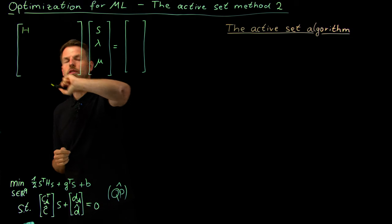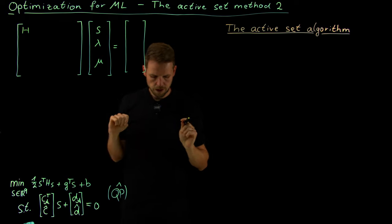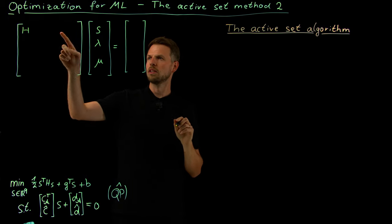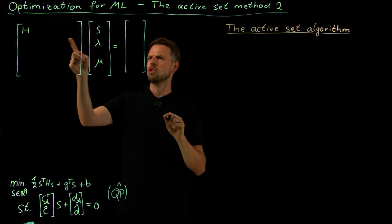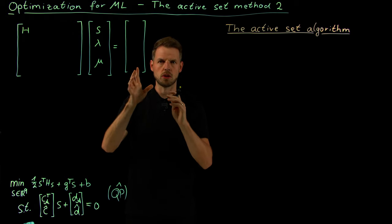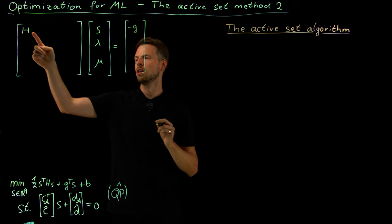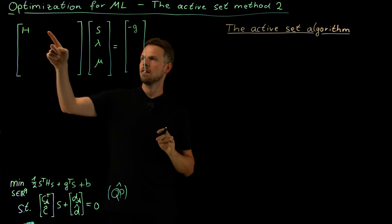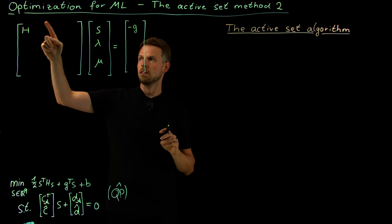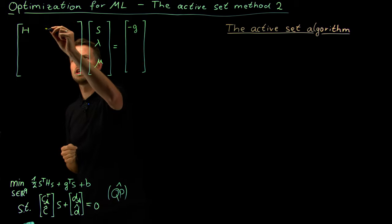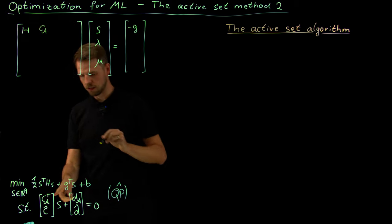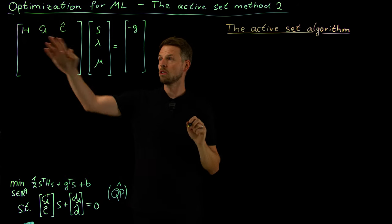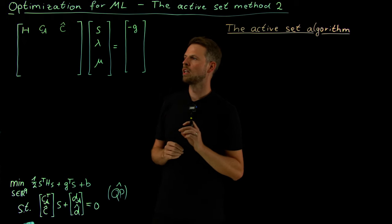Our condition is: the gradient of the loss function has a quadratic term H times s, plus derivative of the linear term g times s which gives g, moved to the left-hand side. Then we have the derivative of the constraints — the coefficient matrix times lambda — so we have H·s + g + C·lambda + Ĉ·mu = 0, written as our KKT condition for optimality.